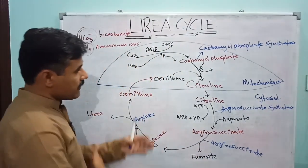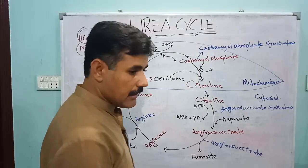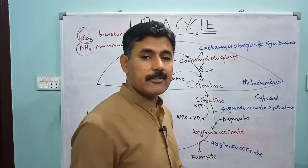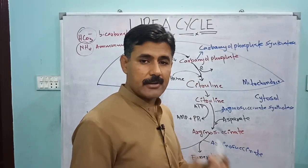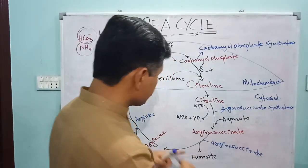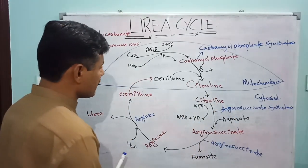In order to convert ammonia into urea, it is an ATP-consuming cycle that takes place in the liver. Let us study the steps of this cycle.